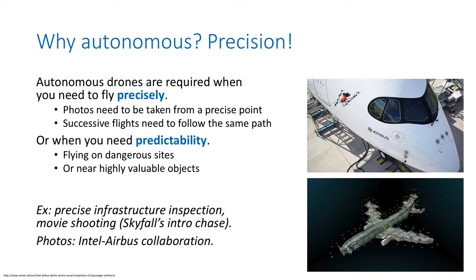Autonomous drones also bring predictability. You can fly in dangerous sites or near high-value objects, because you know exactly how they will fly — it's predicted by the software.